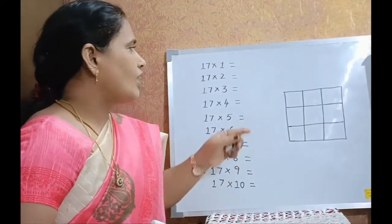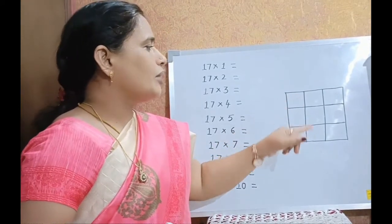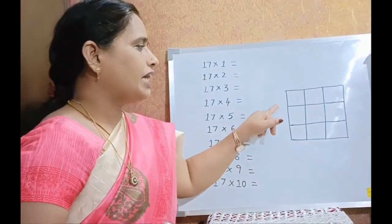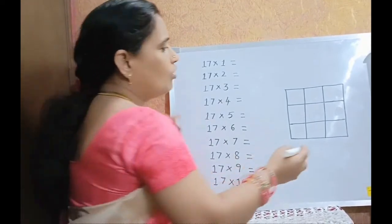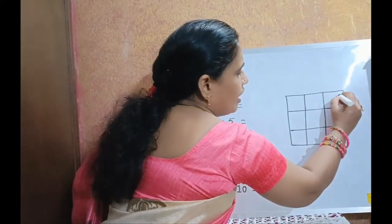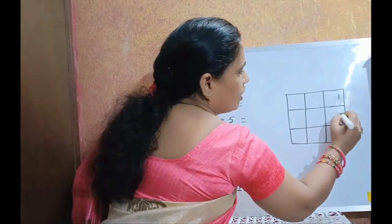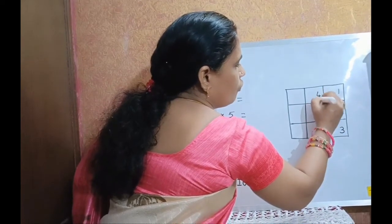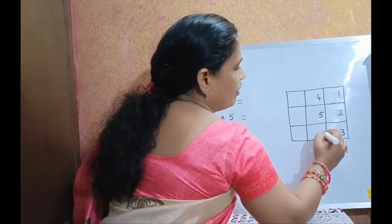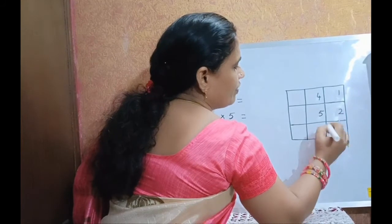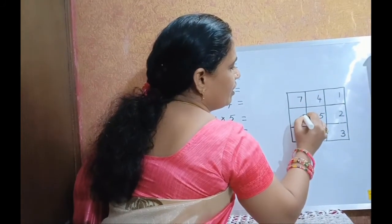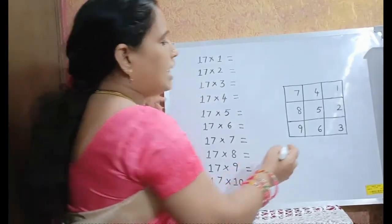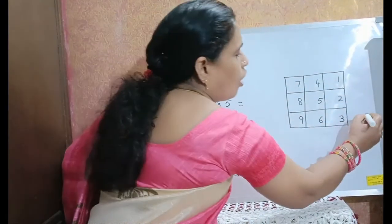For the table of 17, draw a table with 3 rows and 3 columns. Write out the numbers starting from here: 1, 2, 3, 4, 5, 6, 7, 8, 9, and write 0 outside the box.